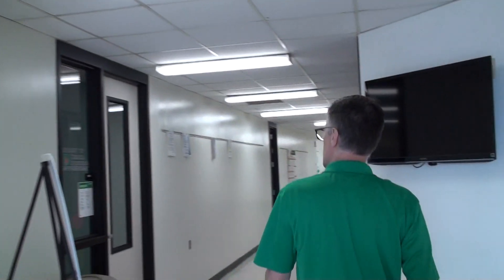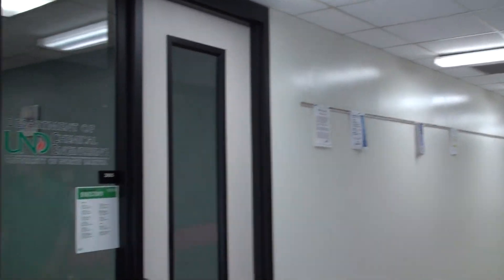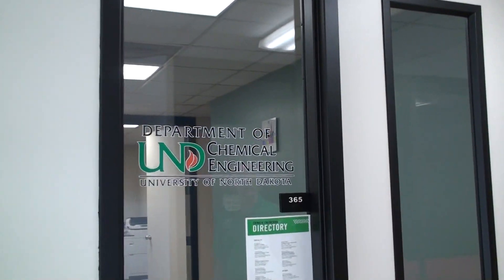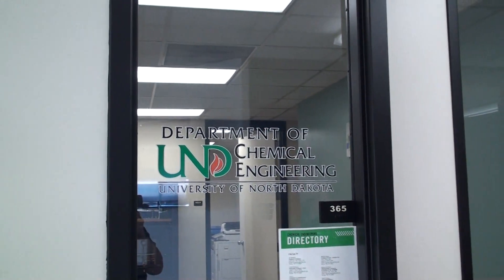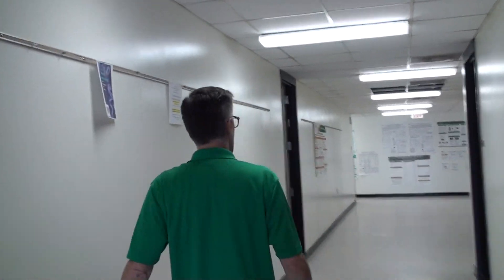So now we're on the third floor of UPSON II. I'll point right here, UPSON II is where we have our department office where we've got the mail room, the department chair's office with a couple of other faculty offices. Since most of our stuff is around the corner, we're going to turn into Harrington.